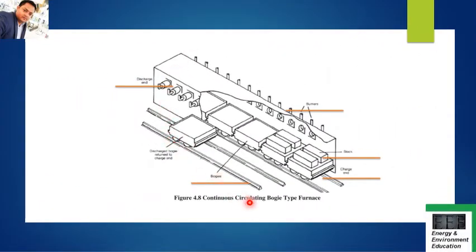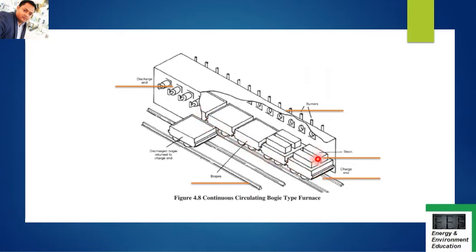With the help of the picture, you can understand the boggy type furnace easily. This is the charge end and this is the discharge end. At the charge end, the stocks are charged and placed on the boggies, and at the discharge end the material is removed. You can see the burner placed inside, and the different boggies - just like a train - on which the stocks are piled up. These boggies move inside the furnace and the stocks get heated up as the boggies move through. You can expect a question on this diagram in the exam.